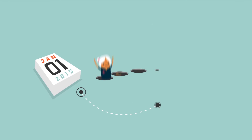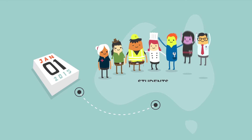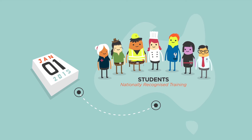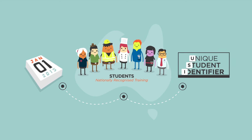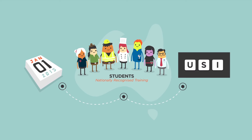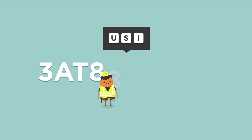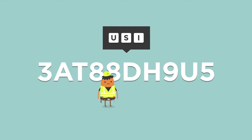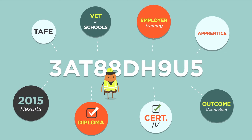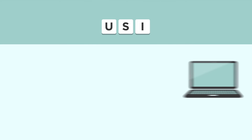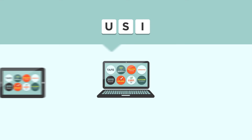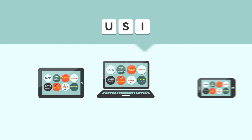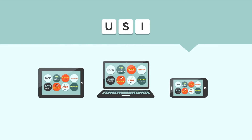From the 1st of January 2015, all students undertaking nationally recognised training in Australia will need to have a unique student identifier. A USI is like an account number, made up of letters and numbers. It will give you direct access to your USI account, enabling access to your training records and results through your computer, tablet or even smartphone, anywhere, anytime.